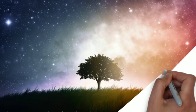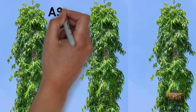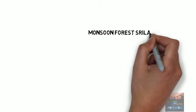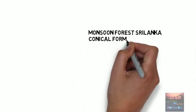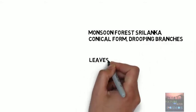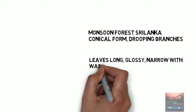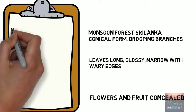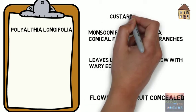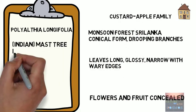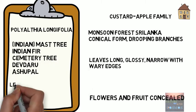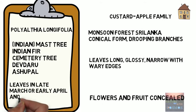Welcome back to Nature and Cosmos. Today we are going to talk about the Ashok tree. The first thing you'll notice about this tree is that it stands at 12 meters — it's fairly tall. It is widely cultivated in India, although the tree comes from the monsoon forests of Sri Lanka. It is usually cultivated in a narrow conical form with short drooping branches. Its leaves are narrow and glossy with wavy edges, which are quite distinctive. The flower and fruit are concealed within the foliage and are seldom noticed. The tree's scientific name is Polyalthia longifolia. It is from the custard apple family. Other names include Indian musk tree, Indian fair symmetry tree, Ashok, Dev Daru, and Ashokal. The leaves are renewed in late March or early April, with another green flush in the rains.